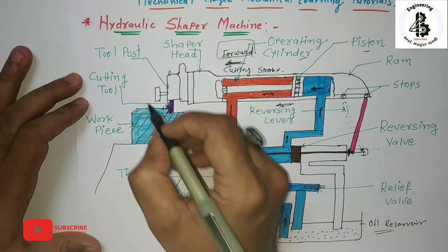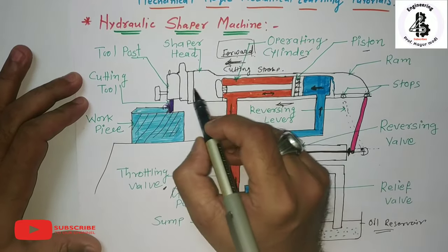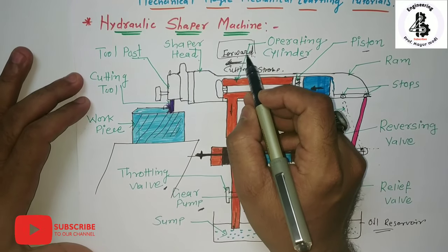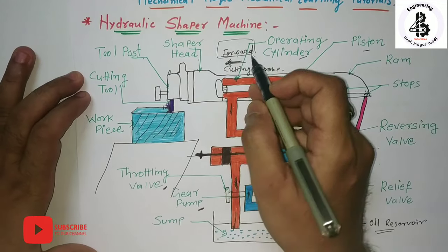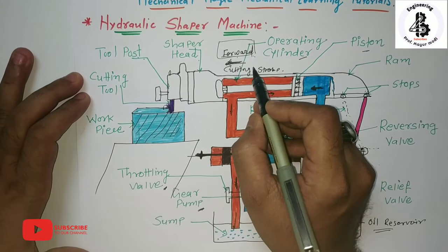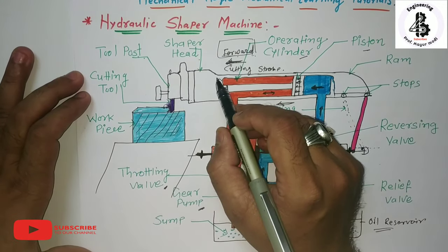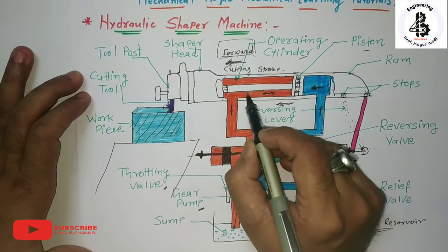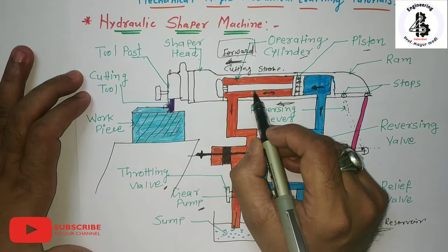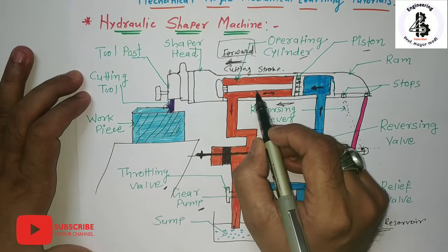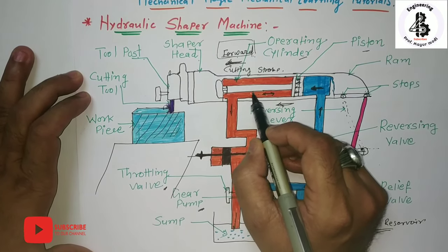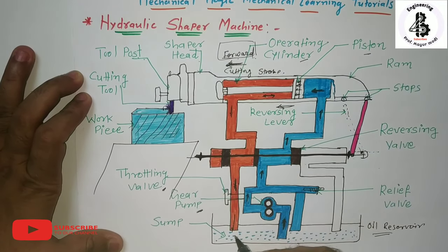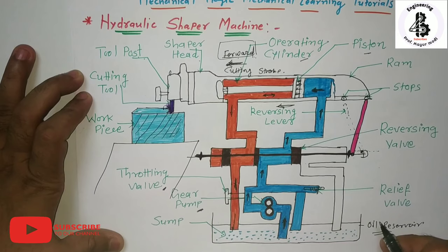One hundred percent material removal takes place only during the forward stroke. At the end of the forward stroke, the oil present on the left side of the cylinder is discharged to the sump through the throttle valve, returning to the oil reservoir.